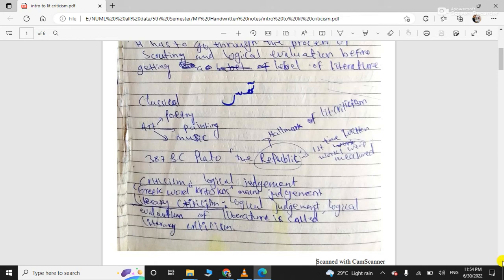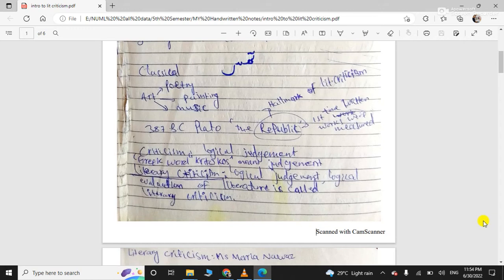Criticism comes from the Greek word kritikos which means judgment. So it is a logical judgment. Literary criticism is the logical judgment and logical evaluation of literature.